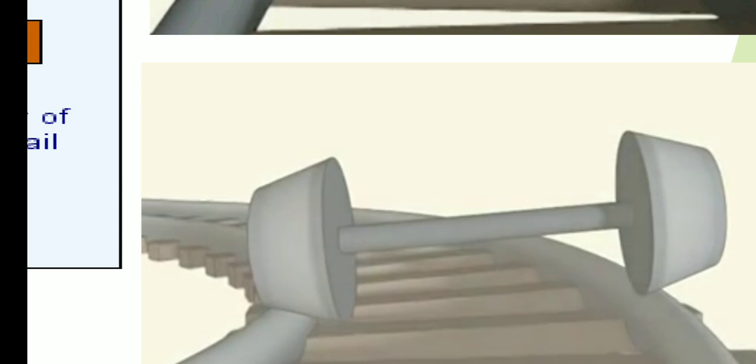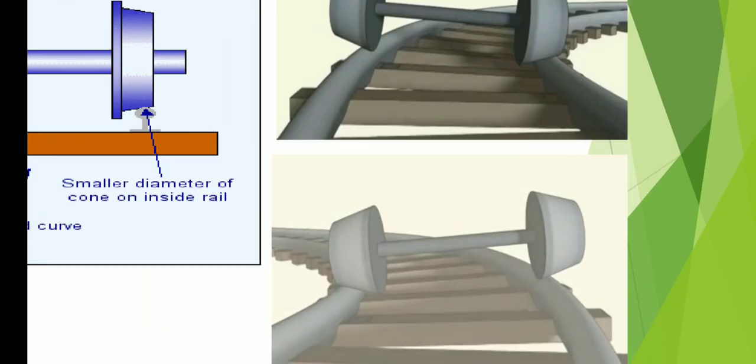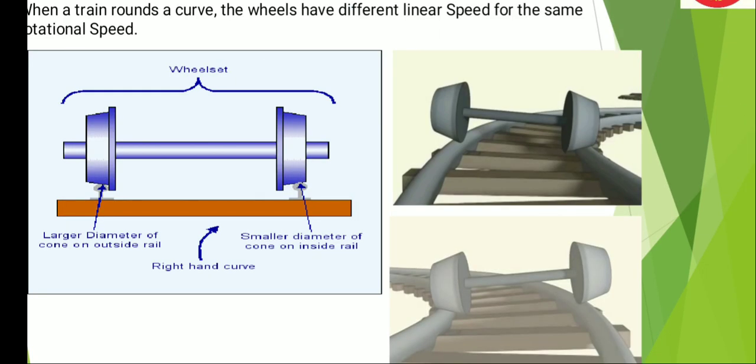This way it keeps on adjusting itself and you get a comfortable journey. So this is the concept of the train taking a turn — there is no differential in trains. I hope you have understood how a train takes a turn.